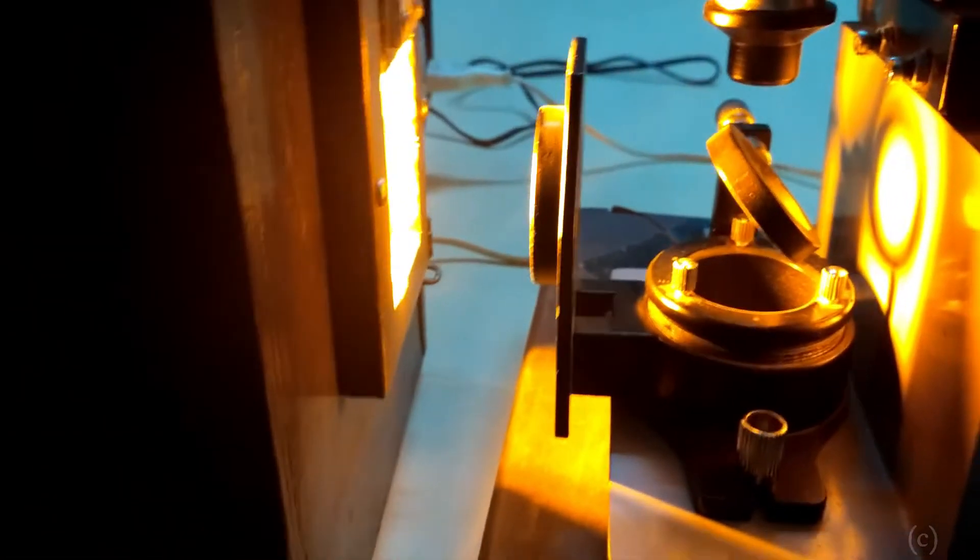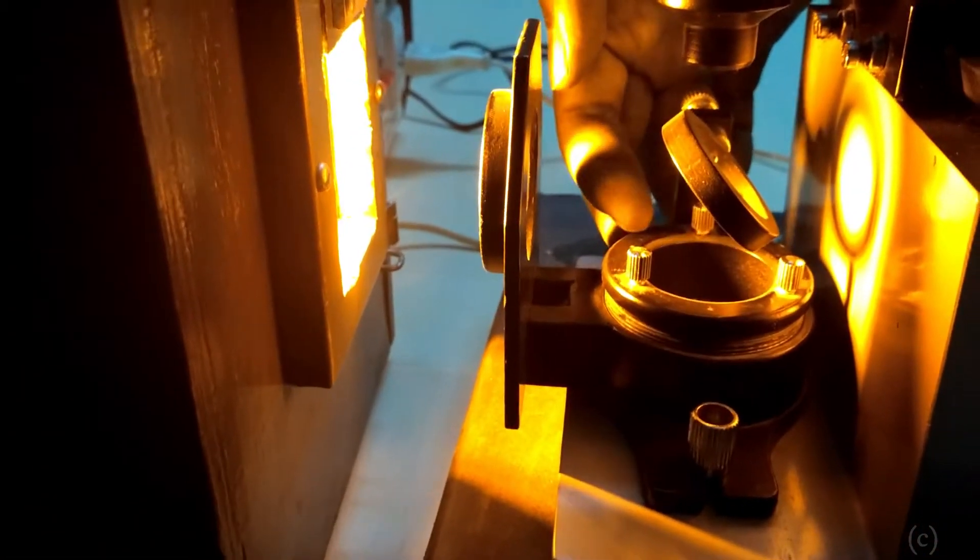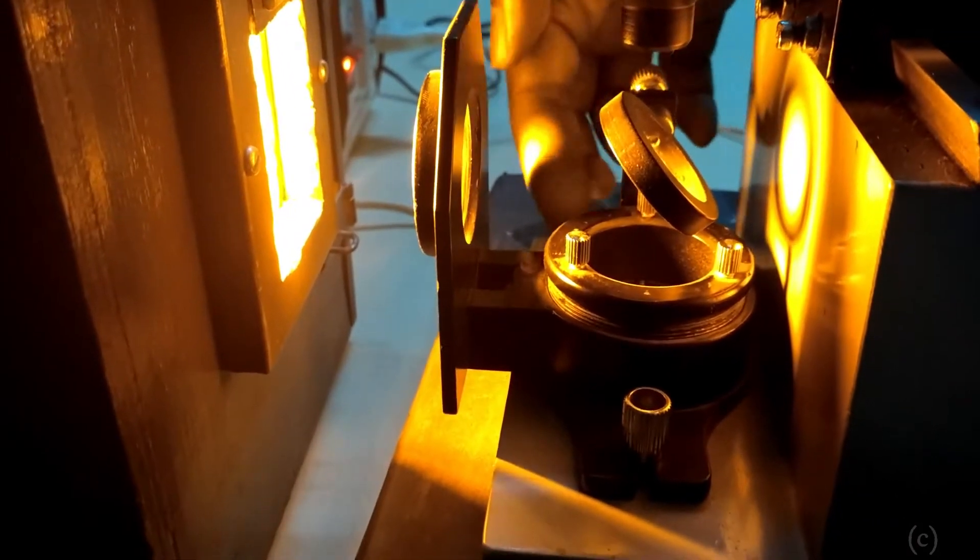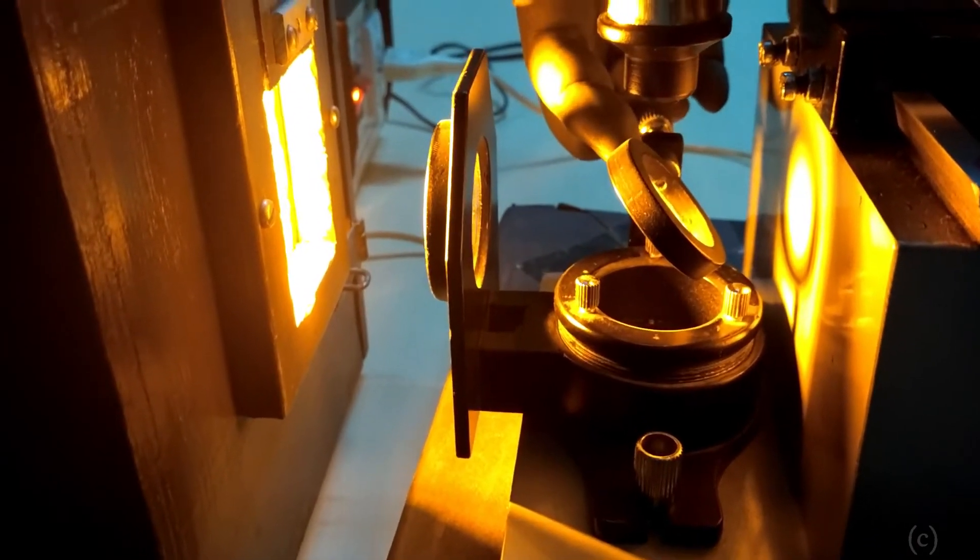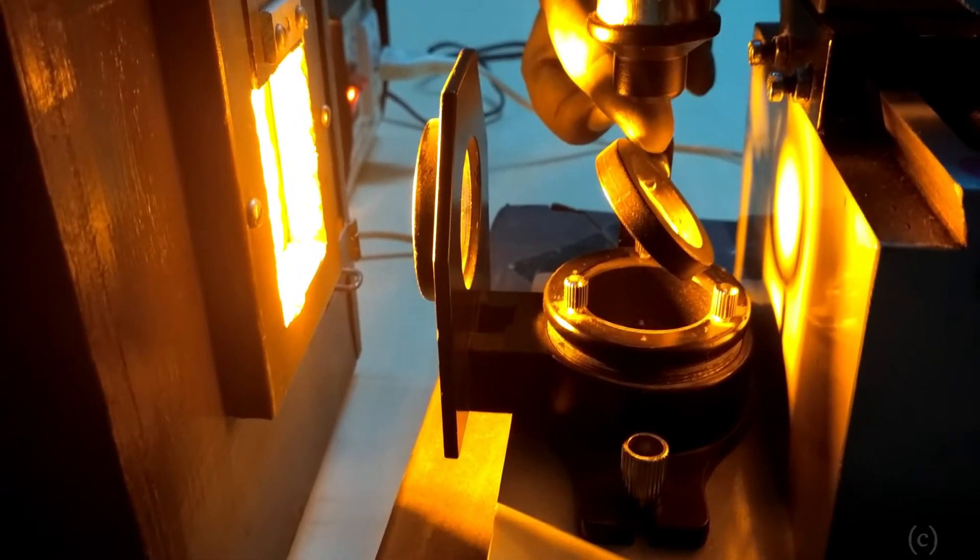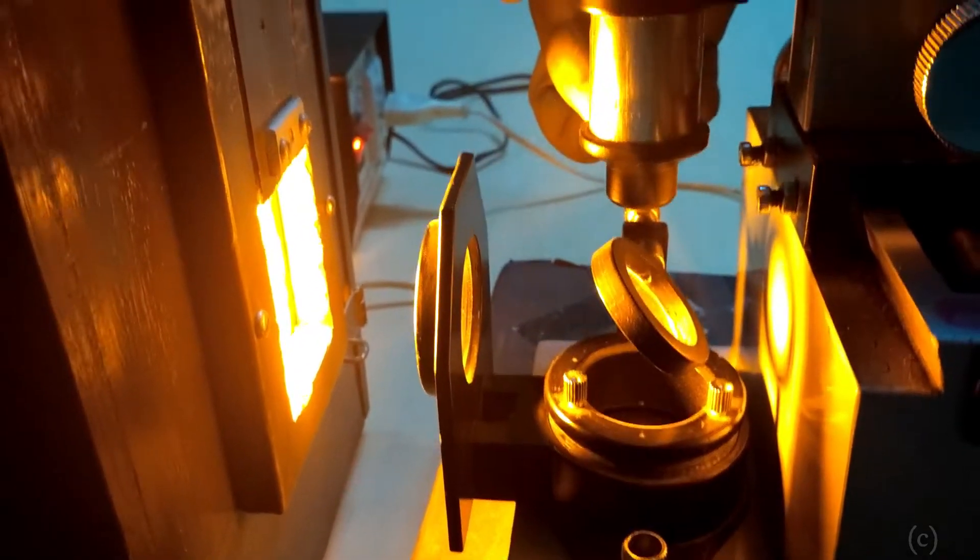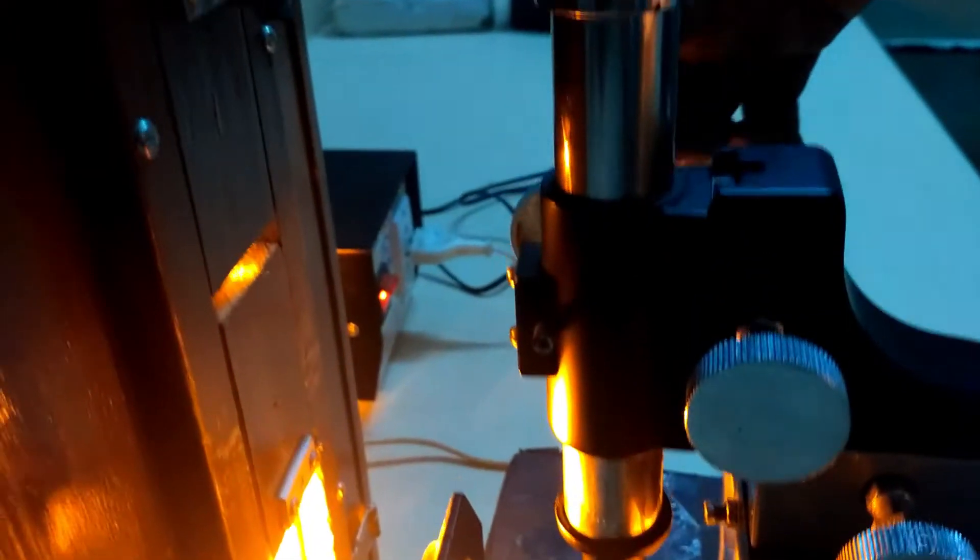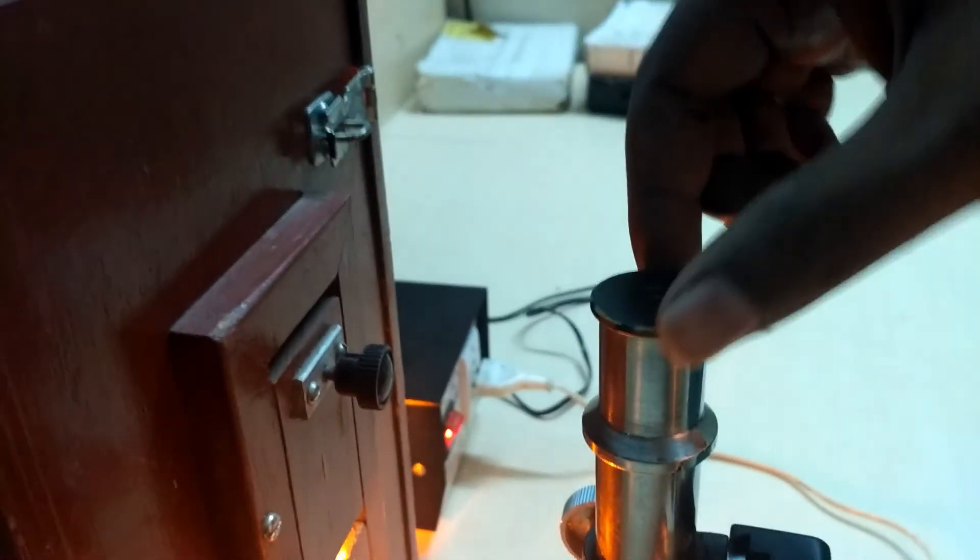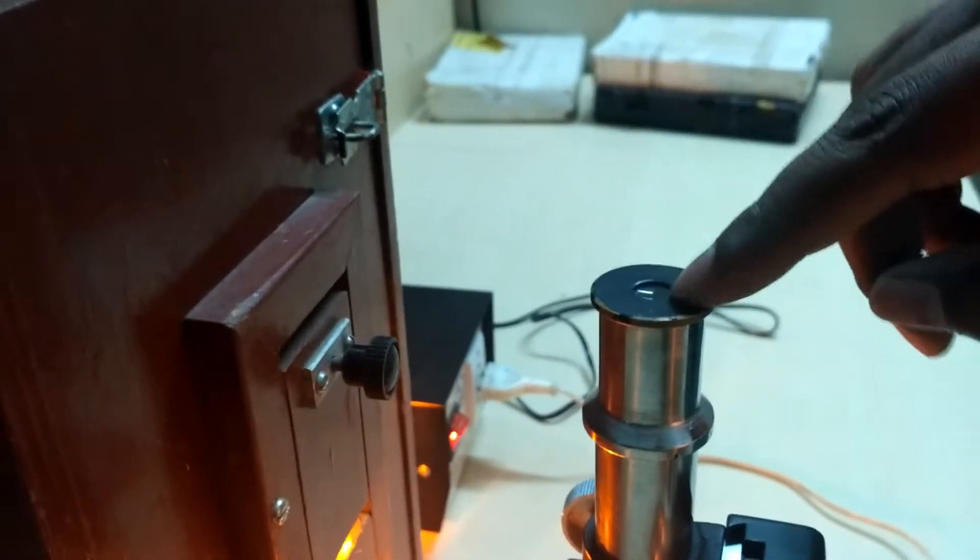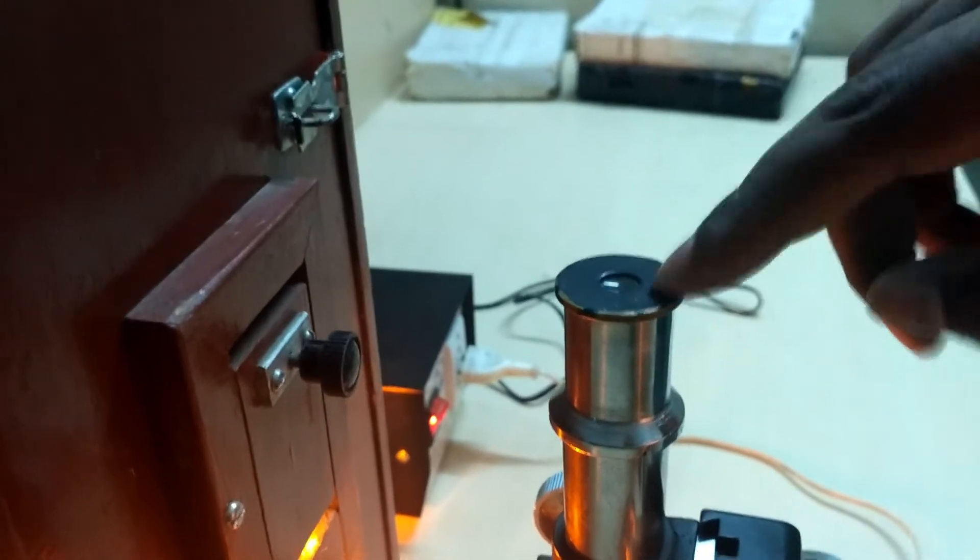From that, the air film, that is air wedge shape film which is inside this, light will get reflected upwards and again from the same glass plate it will get transmitted and it will reach the microscope. It will be magnified using the microscope and you can see from this eyepiece how the Newton's rings are.